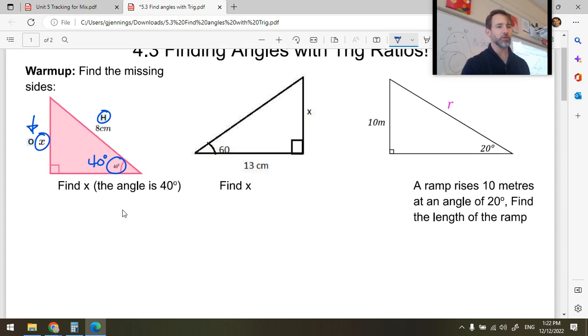Then we might notice, if we look at Soh-Cah-Toa, we have the necessary ratio right there. Sine is opposite over hypotenuse. So I recommend that you set up the equation first. Actually write out your trigonometric ratio each time, and then substitute in your values.